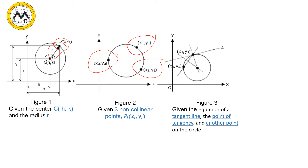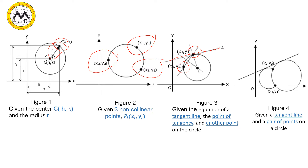The third case is given the equation of a tangent line at the point of tangency and another point on the circle, from which we solve the equation of the circle. Next, the fourth case is given a tangent line and a pair of points on the circle.